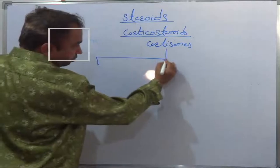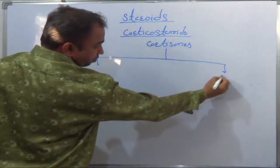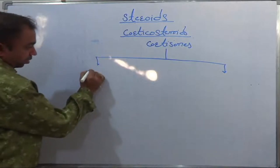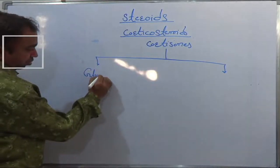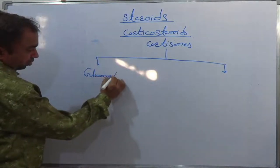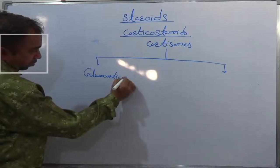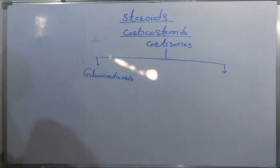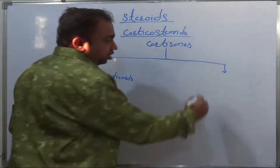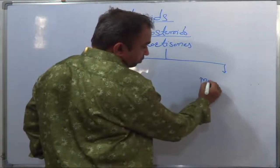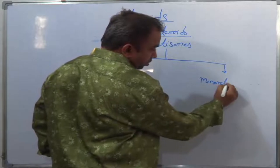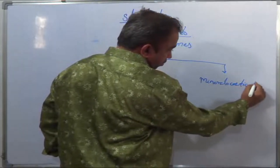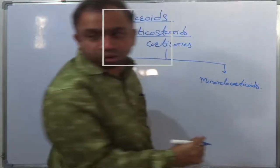The first type is glucocorticoid, and the second type is mineralocorticoid.